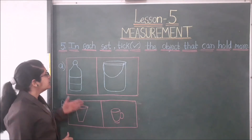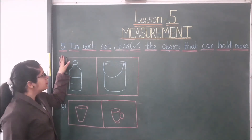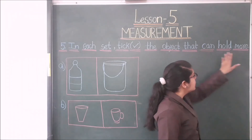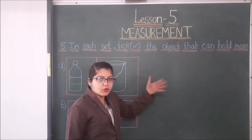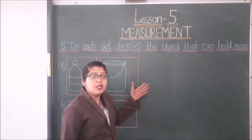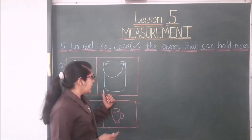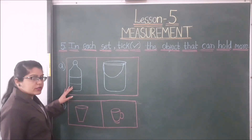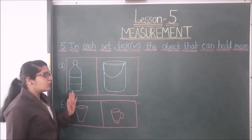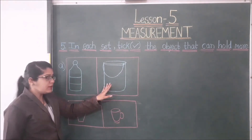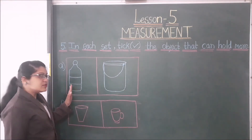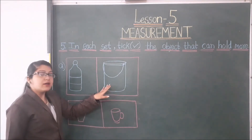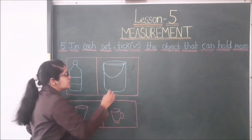Students, let's see question number 5, the last question in your book. In each set, you have to put a tick on that thing which can hold more. Let's see the first one — two pictures are given: a bottle and a bucket. Which can hold more? A bucket can hold more than a bottle, so here I will put a tick on the bucket.